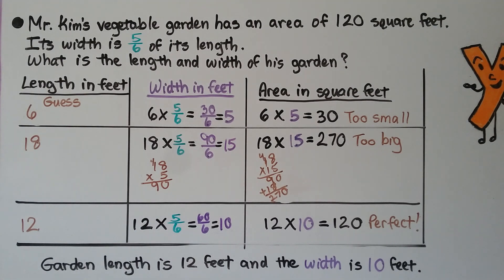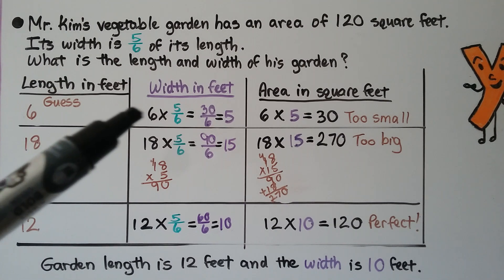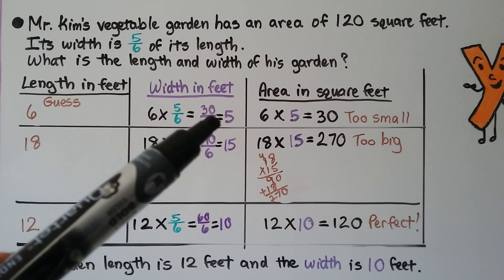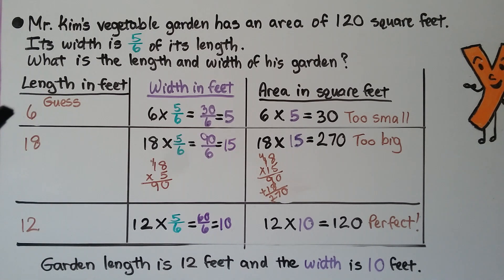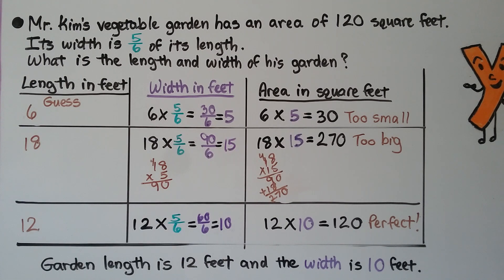Mr. Kim's vegetable garden has an area of 120 square feet, and its width is five-sixths of its length. What is the length and width of his garden? We can start guessing. We guess a length of six feet. The width is five-sixths of that: six times five-sixths gives thirty-sixths, which simplifies to five. The area is six times five, which is only 30 square feet — too small. It needs to be 120 square feet.